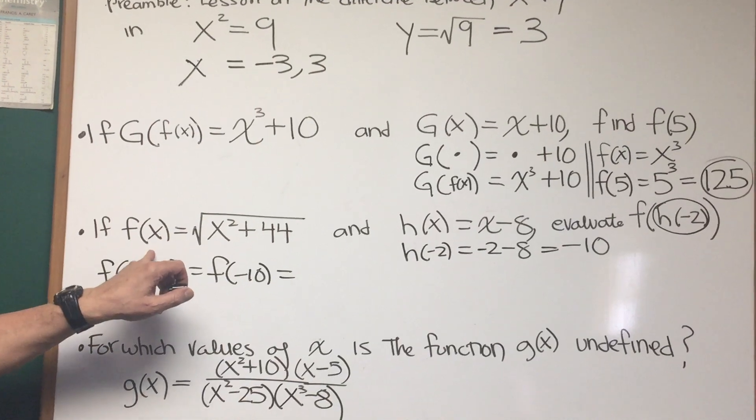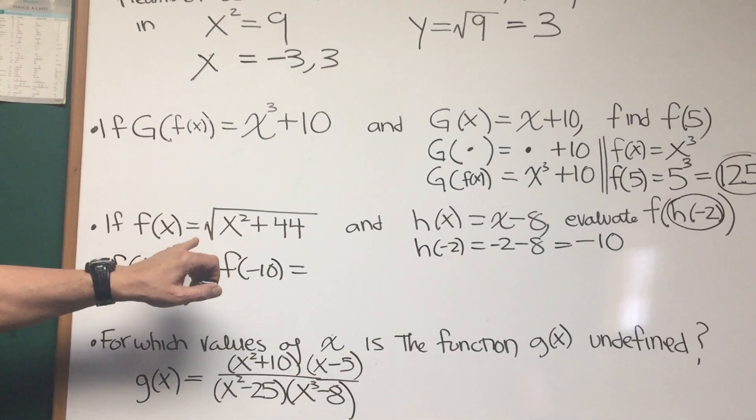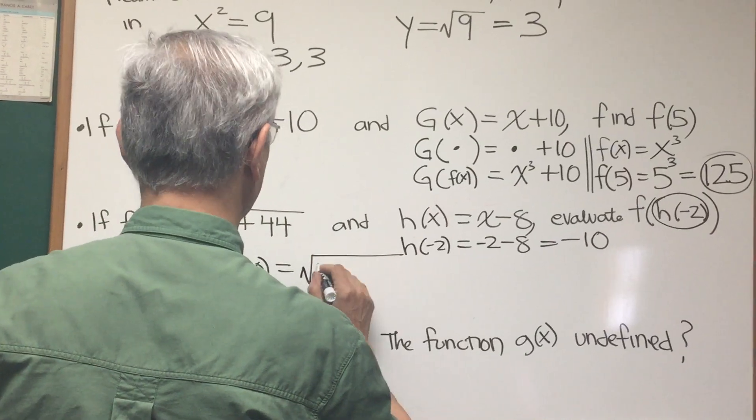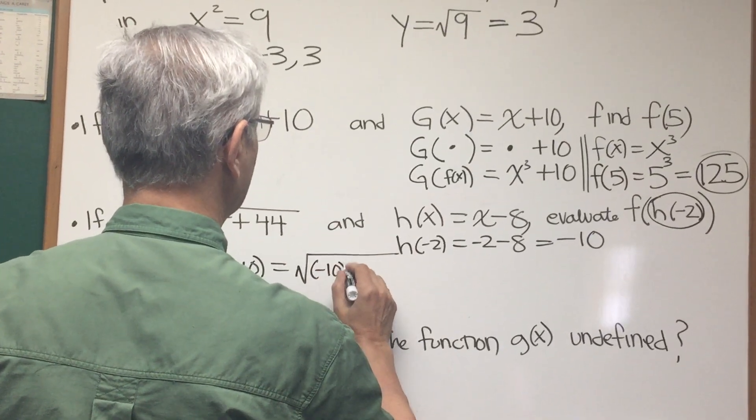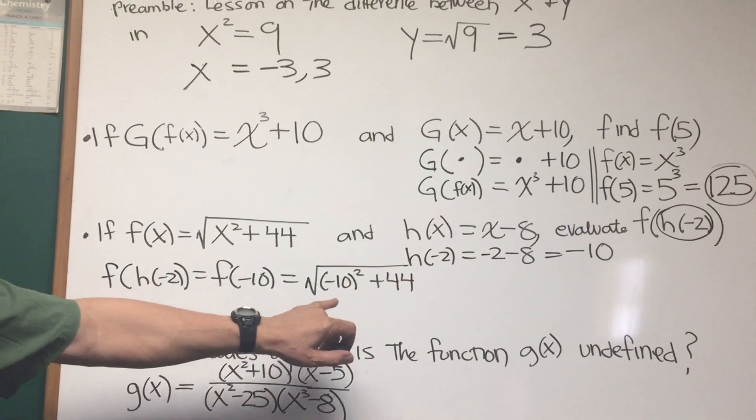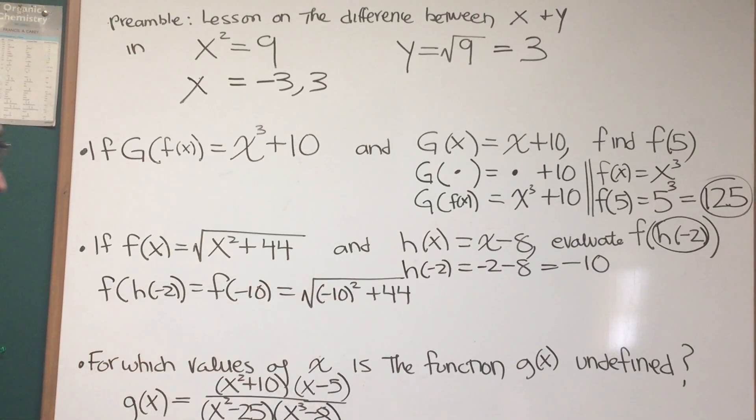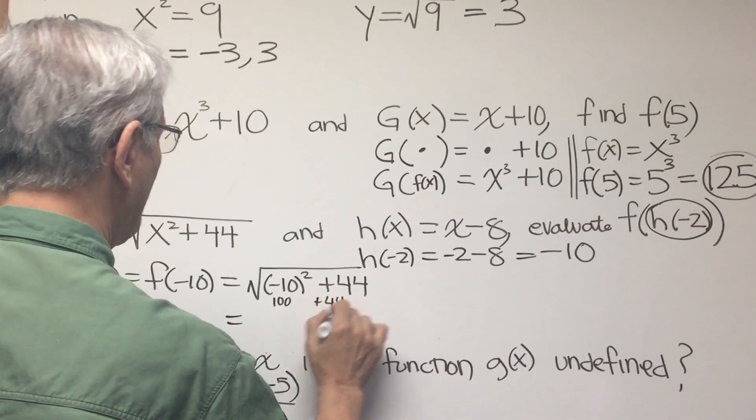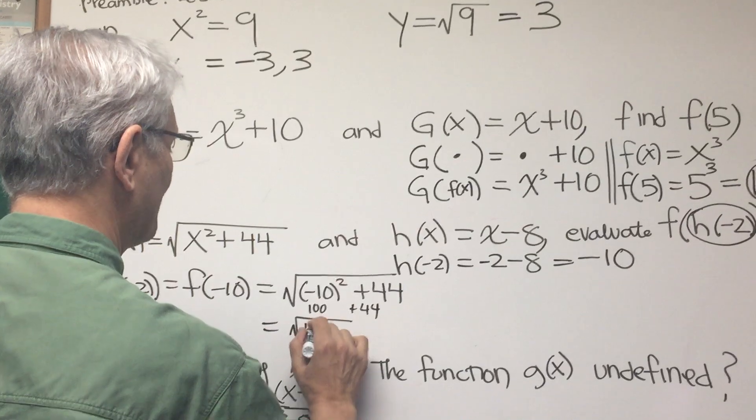Well, we know what the definition of f of x is, the square root of x squared plus 44. So, that's going to be the square root of negative 10 squared plus 44. Negative 10 squared is 100. So, this is going to be equal to the square root of 100 plus 44, which is the square root of 144.